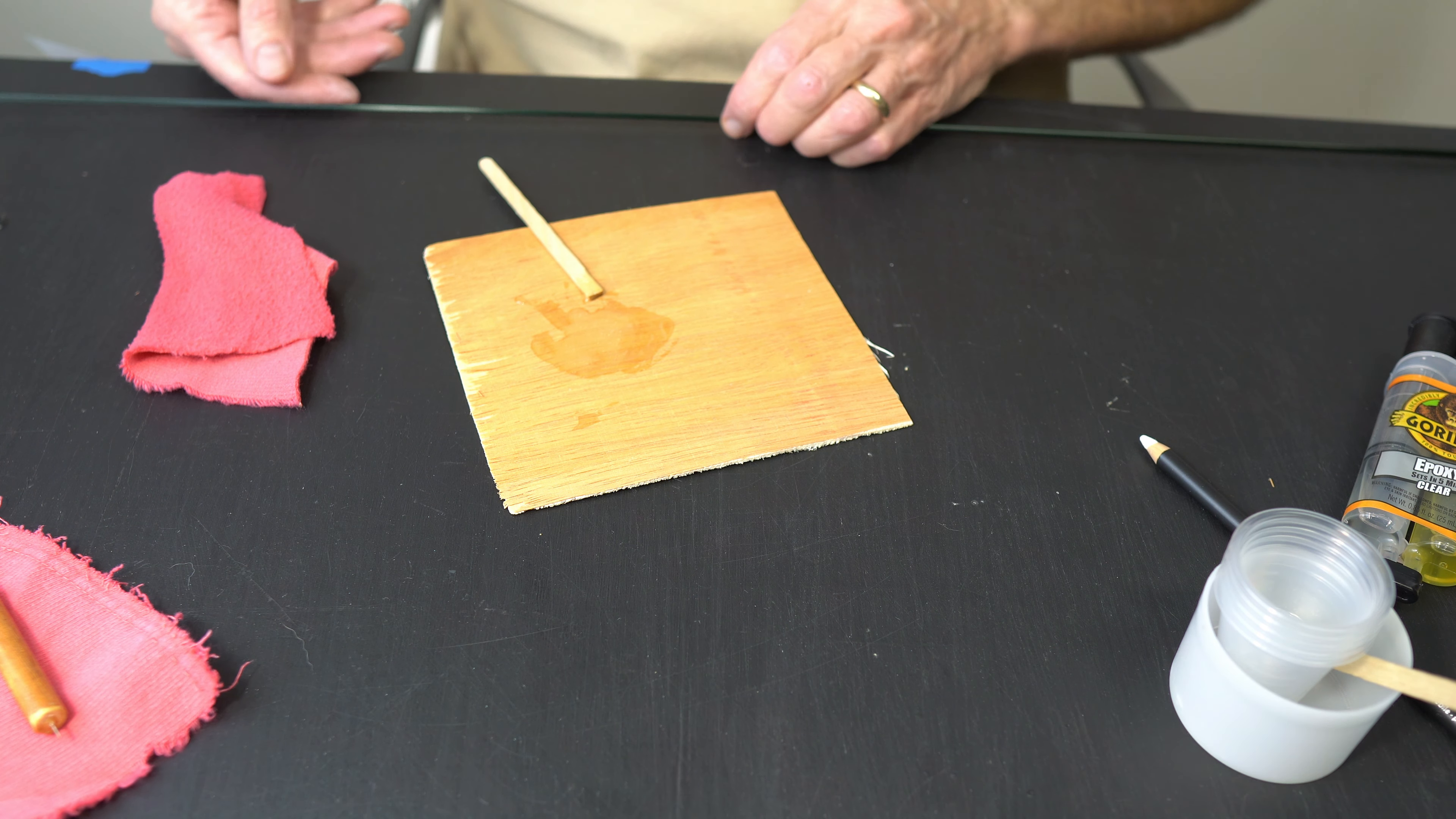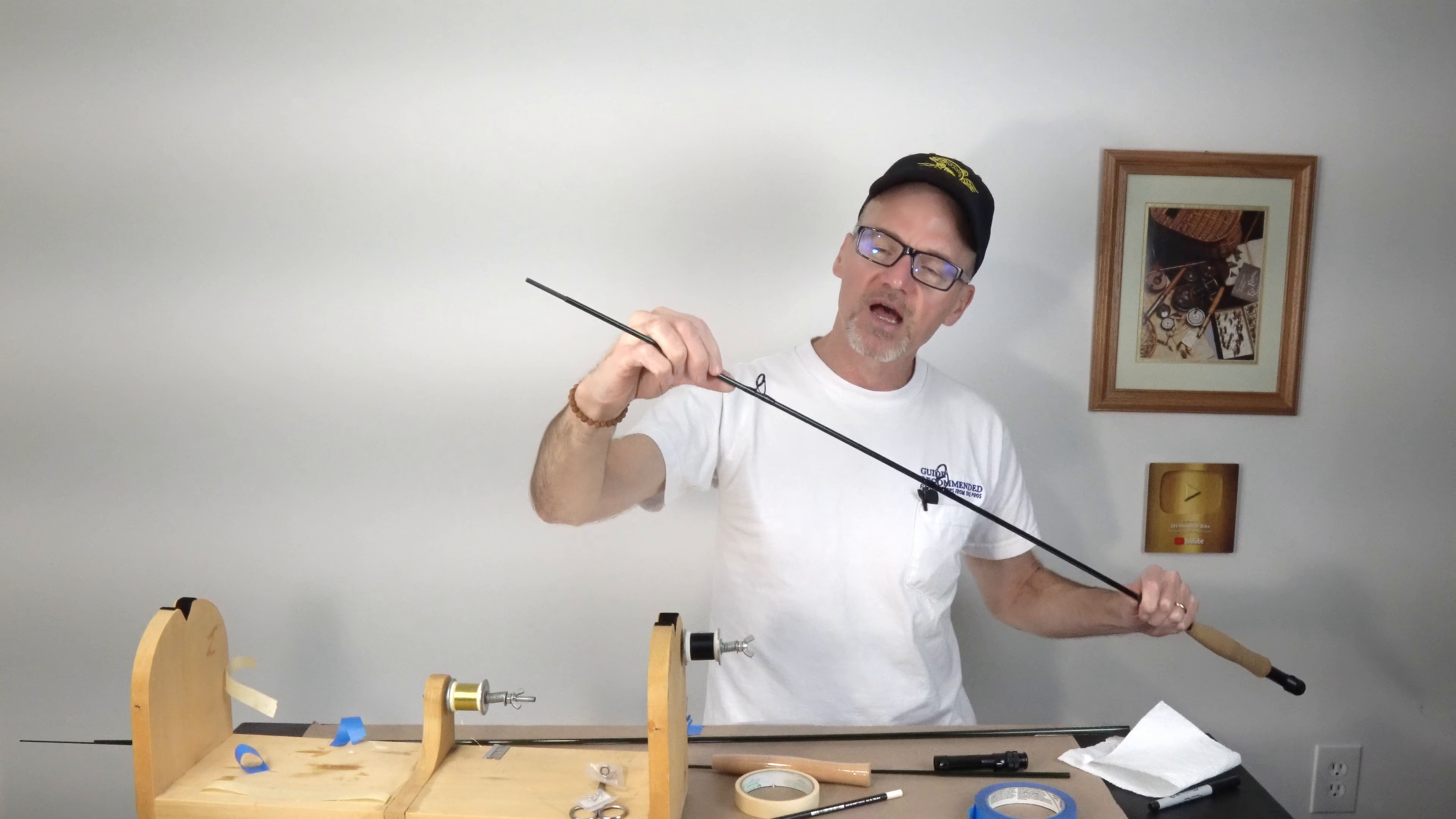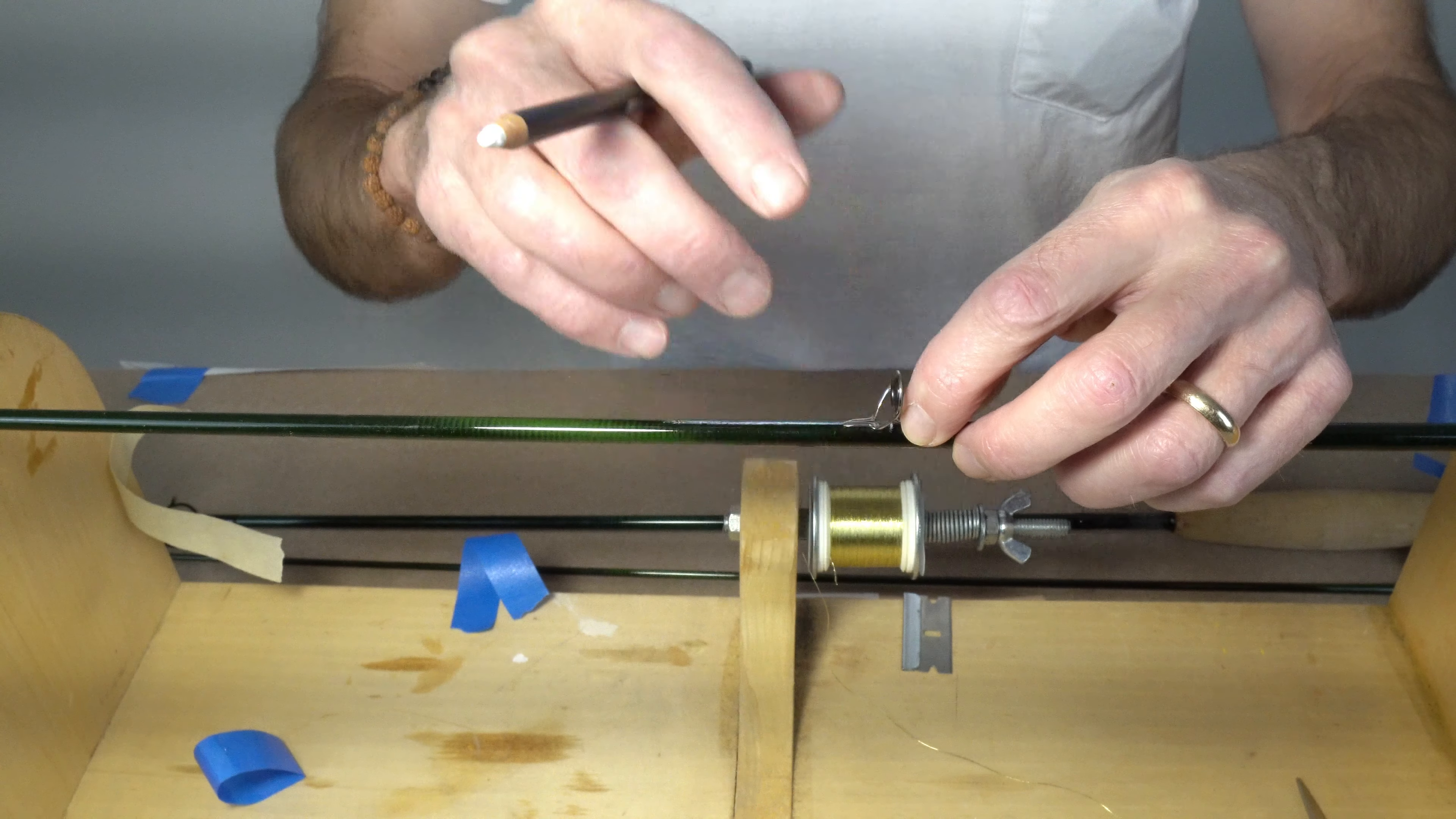Let's set that to the side. Next we get the fun stuff, we get to start wrapping some guides. Step six is measuring the placement of your guides from your guide spacing chart, taping them temporarily onto the rod, and then wrapping your guide onto the rod with thread. With our spine of the fly rod found and our measurement from the tip top to the position of our guide, let's place one of our guides onto the rod.